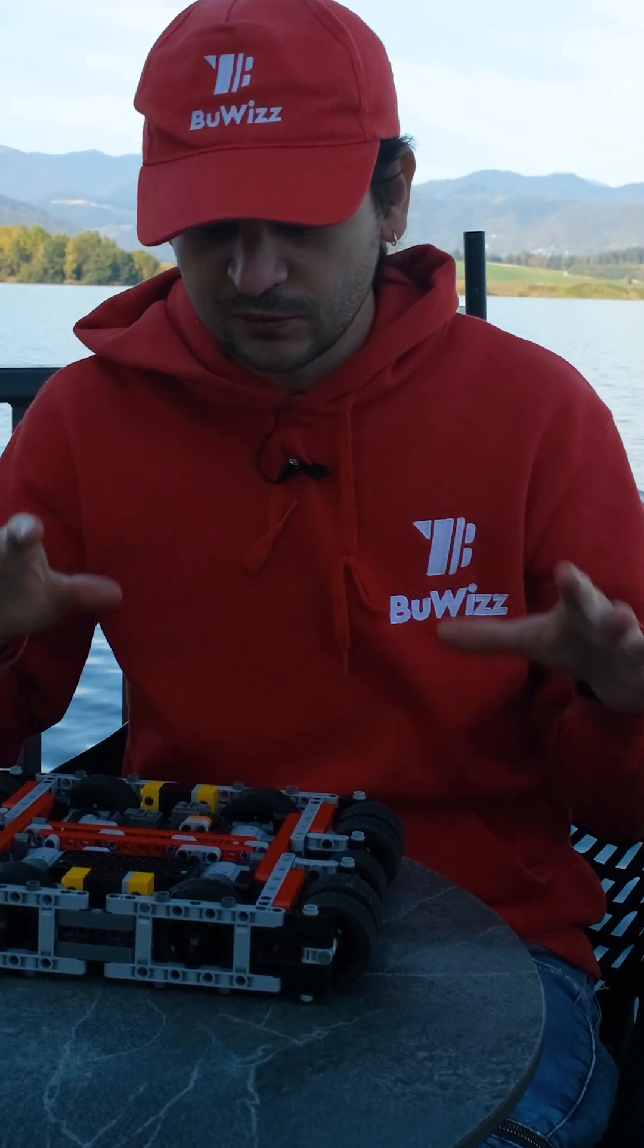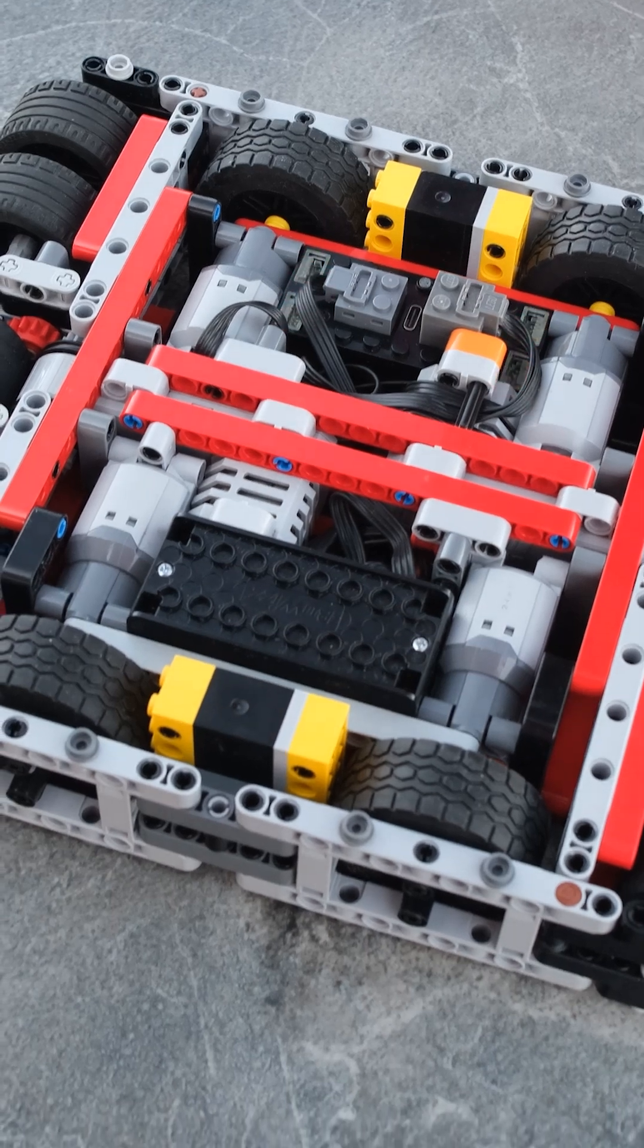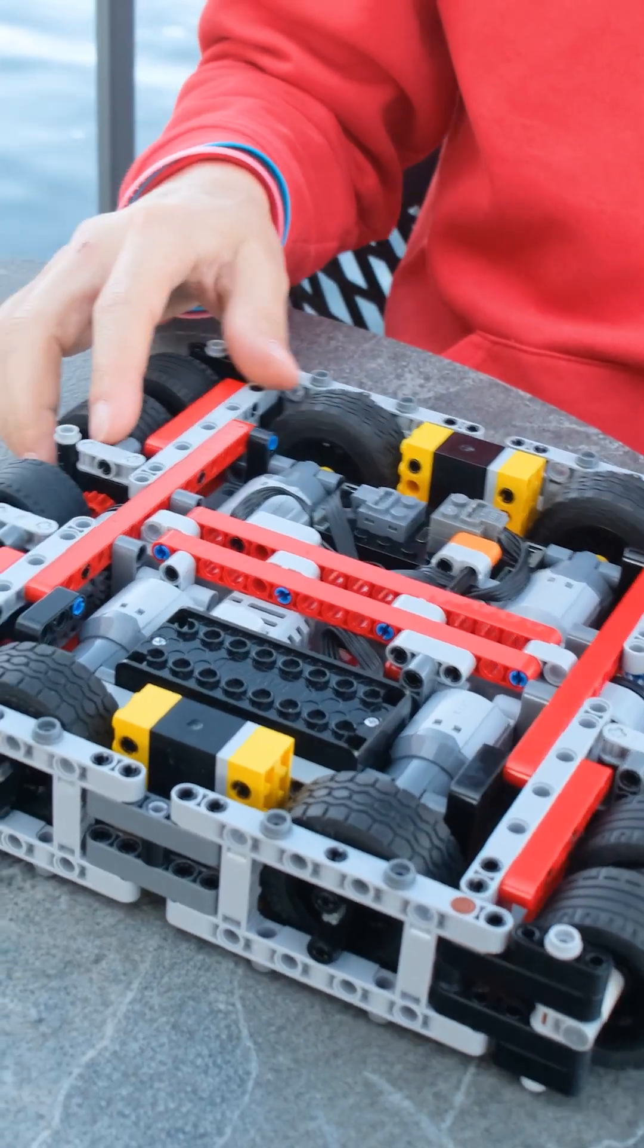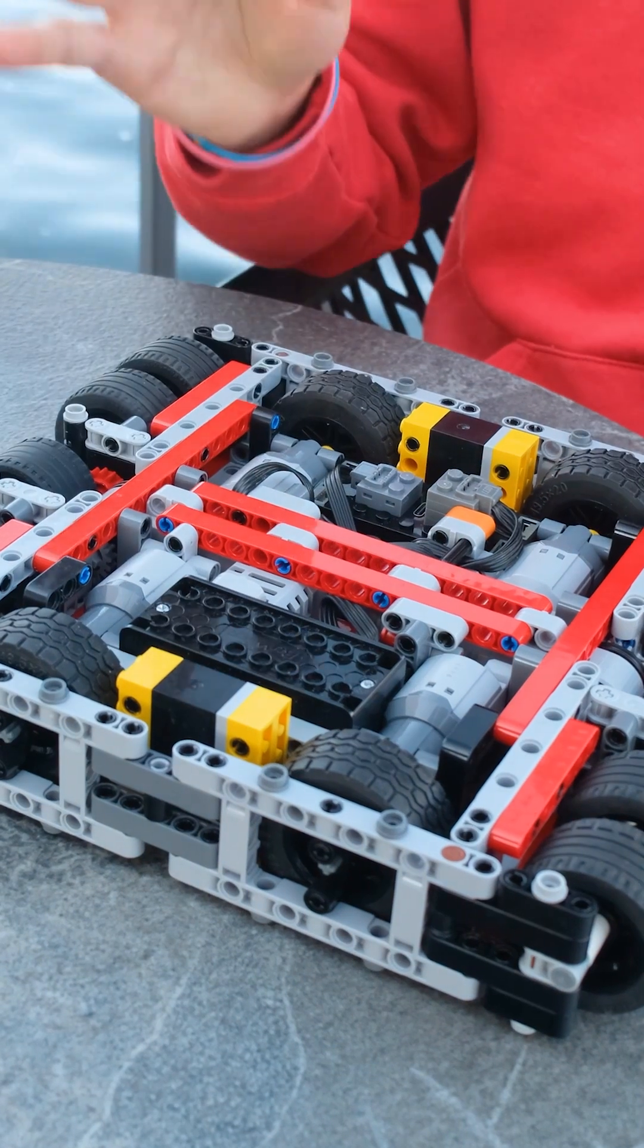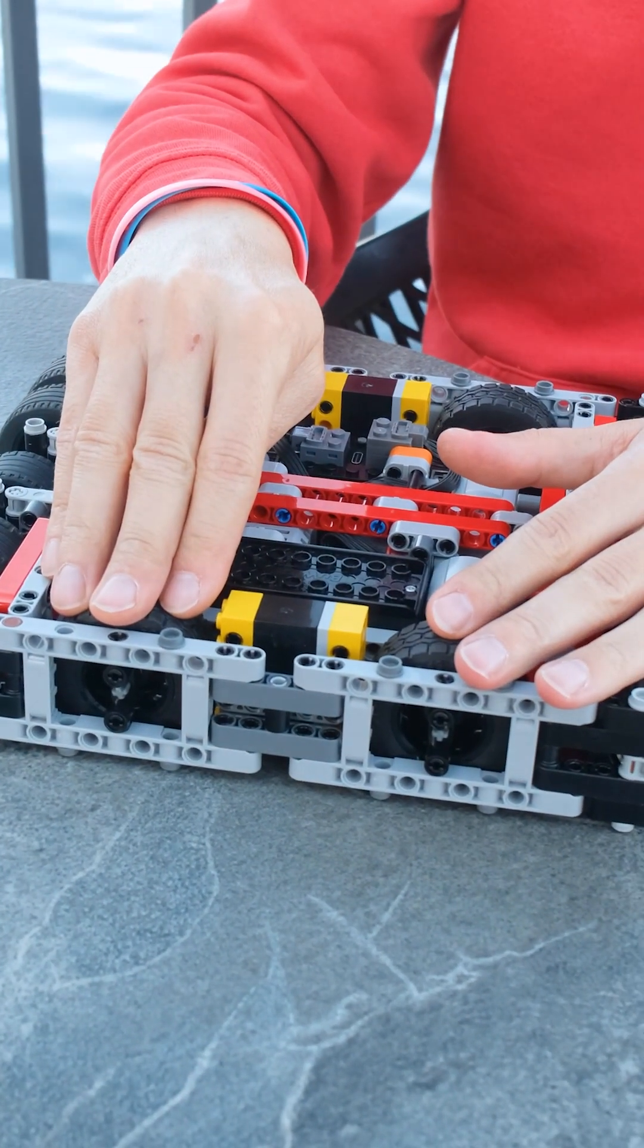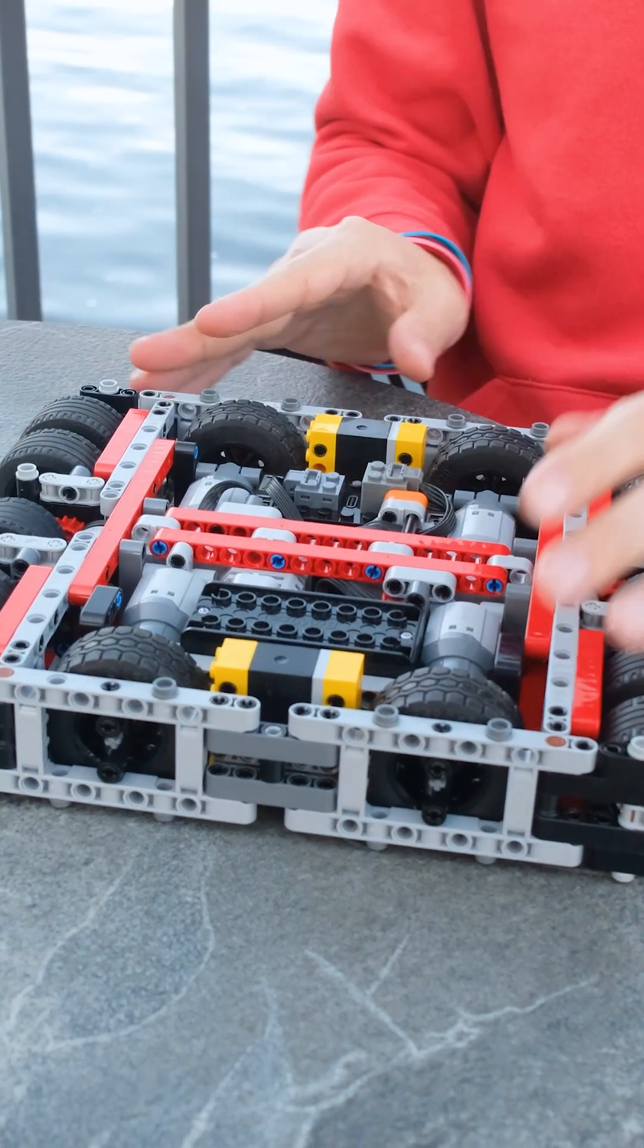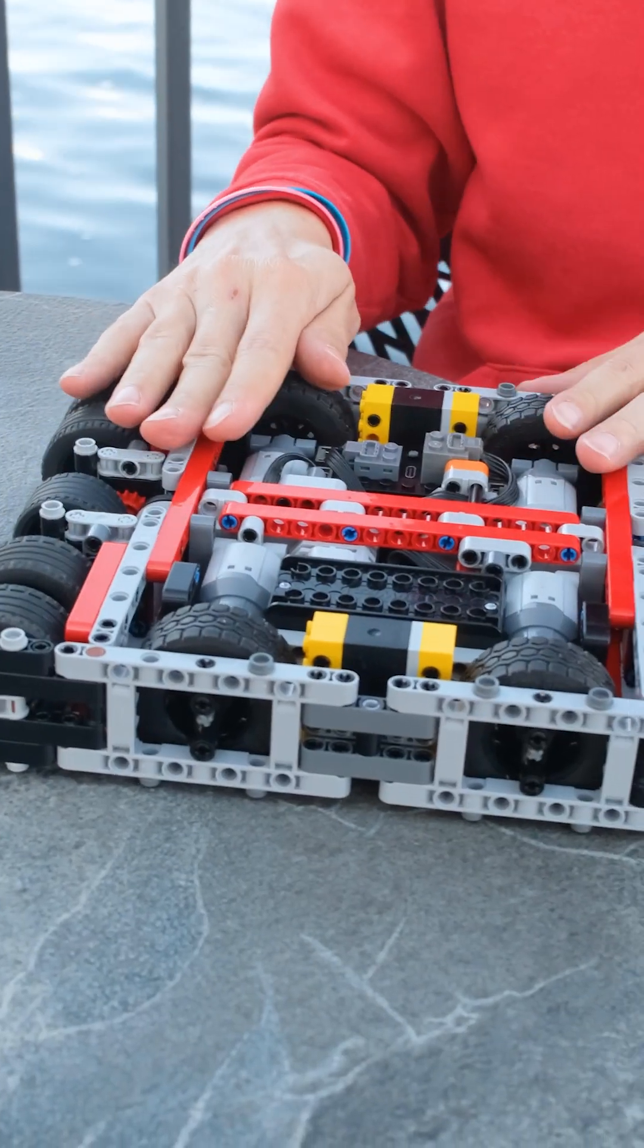First we're using one, two, three, four L motors for driving the wheels so we have four wheel drive. It is the usual sumo boat design so you have one pair of wheels on one side, another pair of wheels on the other side and you steer by skid steering them. So that's the driving part.